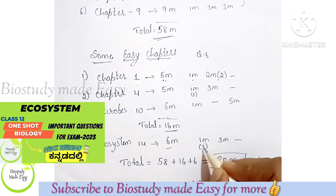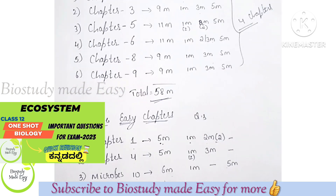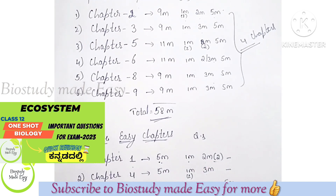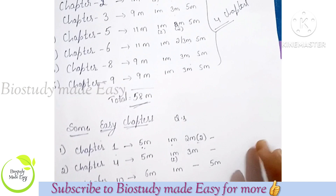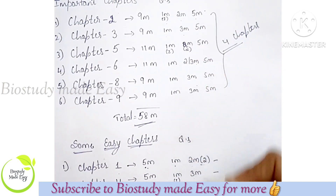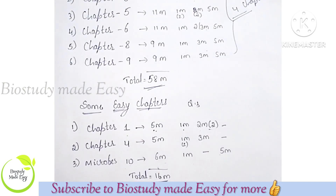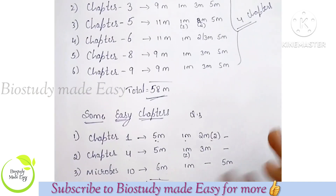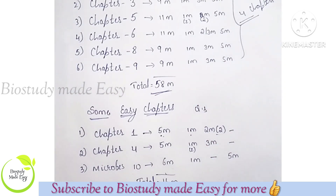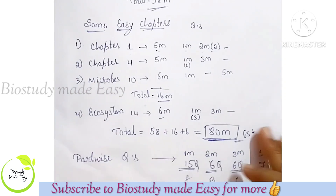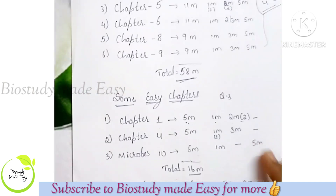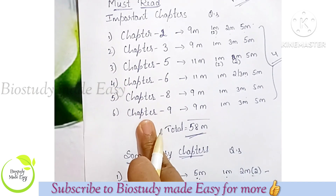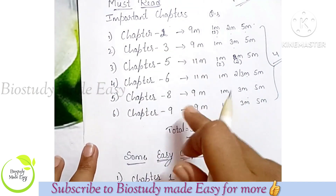If you go to the Ecosystem chapter, out of 80 marks you have 6 marks there — 1 mark with 3 questions, 3 marks. You almost have 1 mark covered. You have 2 marks, 3 marks, 5 marks, but 1 mark is zero. If you cover 1 mark, you can use parts A, B, C, D from that chapter easily. You can also skip it — if you use it, it's very good.